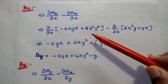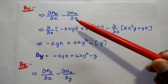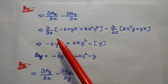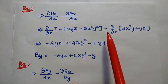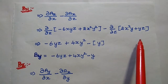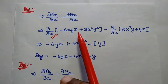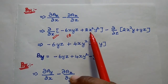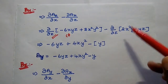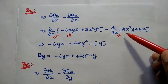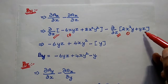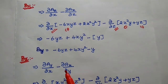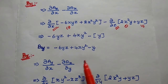Similarly, By = ∂Az/∂x − ∂Ax/∂z: differentiating Az = −6xyz + 2x²y² with respect to x gives −6yz + 4xy². Differentiating Ax = 2x²y + yz with respect to z gives y (since there is no z² term, the first part is zero and yz gives y). Therefore By = −6yz + 4xy² − y.